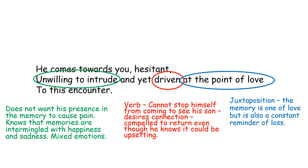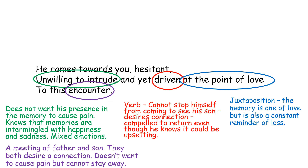We then have the phrase at the point of love, and here we've got a clear juxtaposition, because the memory, even though it is one of sadness and a reminder of loss, is also one of love. The love that the father showed the son was not an adequate type of love — he was unable to show it, unable to articulate it, unable to make the son feel it. And yet there is still a love that the father is desperate to show his son. The final line of this stanza is to this encounter. The word encounter is a meeting, a connection — a meeting here of father and son. There's a suggestion that they both desire a connection, but he doesn't want to cause pain and yet he cannot stay away either.